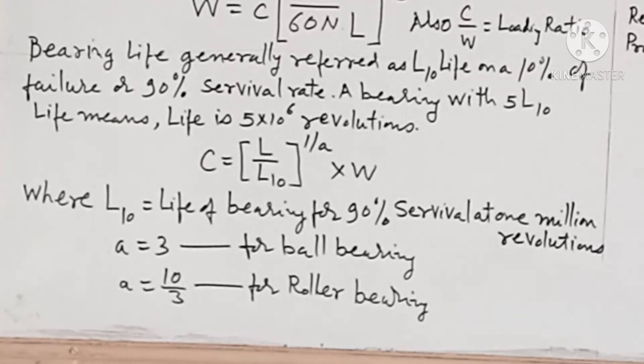C equals L over L10 to the power 1/A times W, where L10 is the life of bearing for 90% survival at 1 million revolutions. A equals 3 for ball bearing and A equals 10/3 for roller bearing.